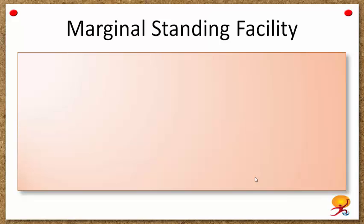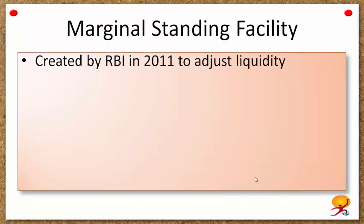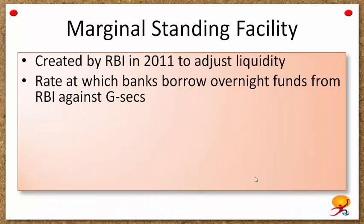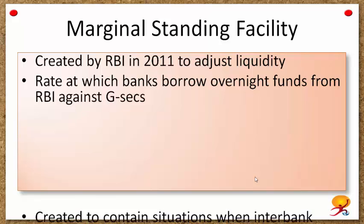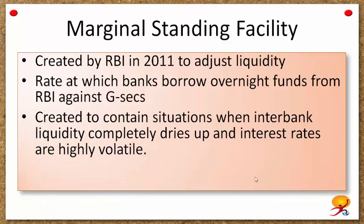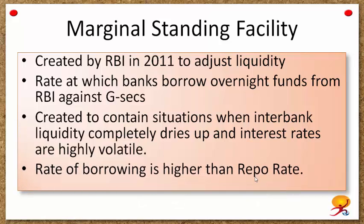The Marginal Standing Facility is another tool for monetary adjustments. It was created by RBI in 2011 to adjust liquidity in the economy. It is the rate at which banks borrow overnight funds from RBI against government securities. It was created to contain situations when interbank liquidity completely dries up and interest rates are highly volatile. The rate of borrowing in this case is higher than the repo rate.